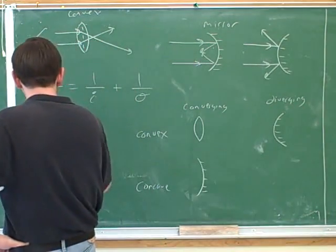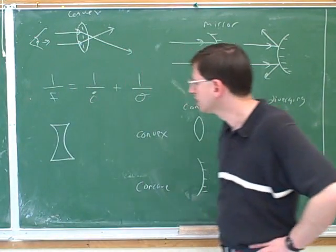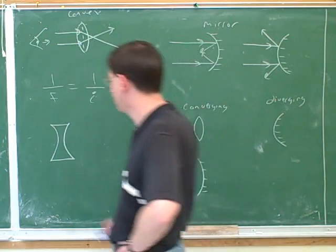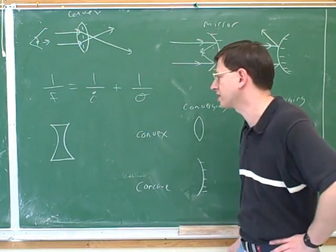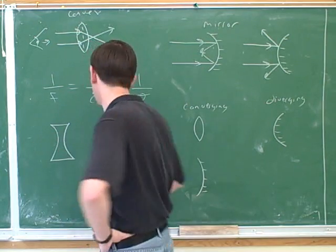And then we can have another type of lens. So here we have one more type of lens. Convex or concave? Concave. Concave, because when you look at it from the outside, it always looks like you're looking into a cave.